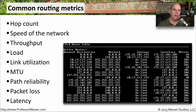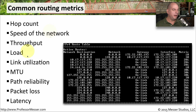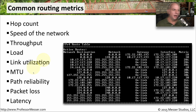There are many different characteristics that may go into determining what the final metric is in a route. For Routing Information Protocol and other routing protocols as well, you might look at hop count. Another interesting routing metric might be the speed of the network — if one particular path is faster than another, we'll want to take the fastest route to our destination. Other characteristics include throughput, load, or link utilization, which take into account how busy a network might be. Routing protocols might also consider MTU, path reliability, packet loss, or latency.